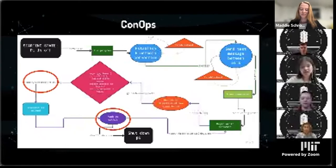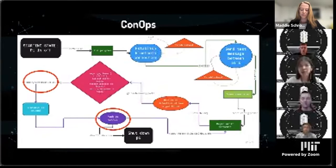For our CONOPS, the things we changed about the concept of operations was that instead of sending telemetry every 360 degrees, we decided to only send it when we detected the algae blooms. We also decided to get rid of the push to GitHub part because we could just check the images straight from the ground station, and we were also shooting for the minimum viable product.